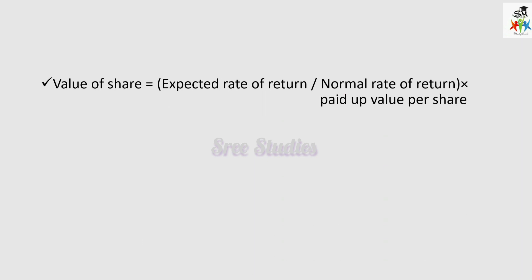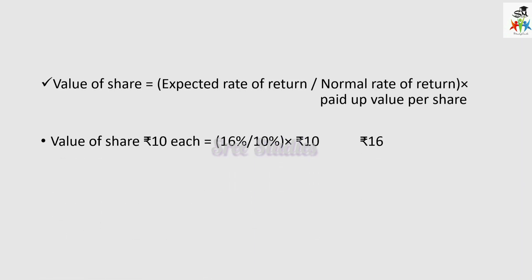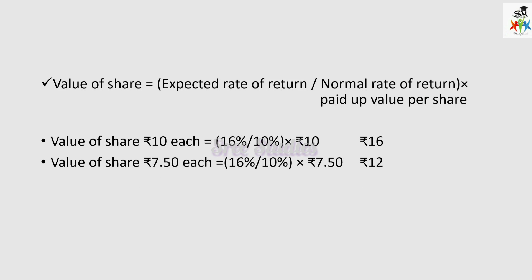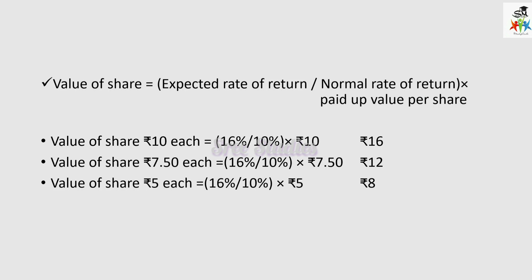The value of share under yield method is: expected rate of return divided by normal rate of return, multiplied by paid up value per share. For shares of rupees 10 each: 16% divided by 10% (given in the problem), multiplied by rupees 10, gives rupees 16. For shares of rupees 7.55 each, we substitute accordingly. For shares of rupees 5 each, substituting gives rupees 8. This is how we calculate for the yield method. Both breakup value and yield value have now been calculated.